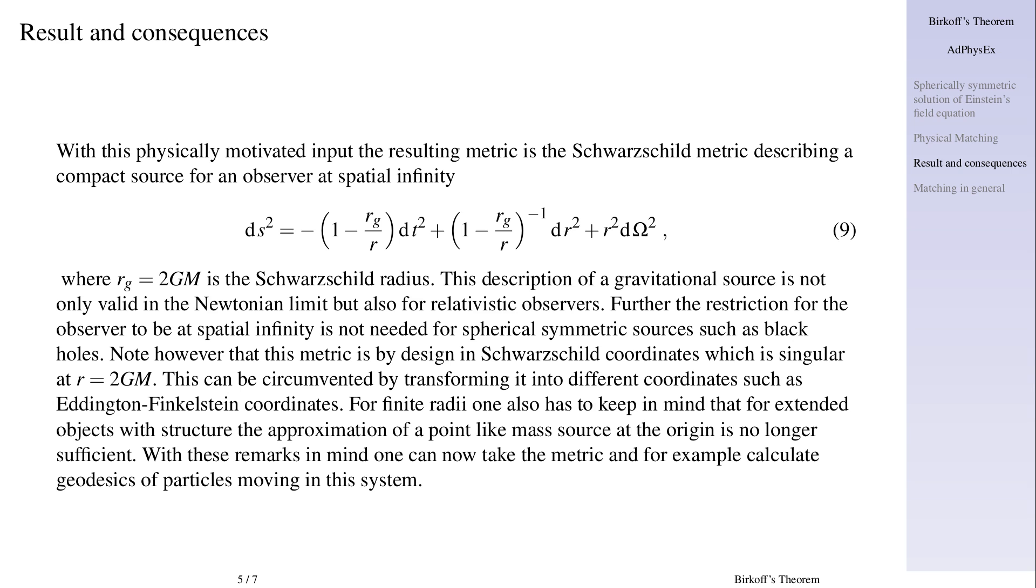Result and consequences. With this physically motivated input the resulting metric is the Schwarzschild metric describing a compact source for an observer at spatial infinity: ds squared equals minus open bracket one minus r g over r close bracket dt squared plus one over open bracket one minus r g over r close bracket dr squared plus r squared d omega squared.